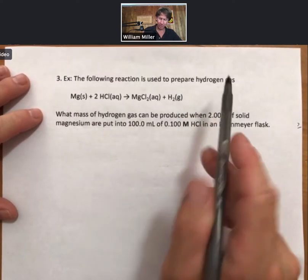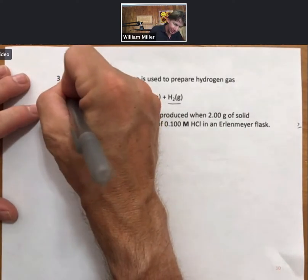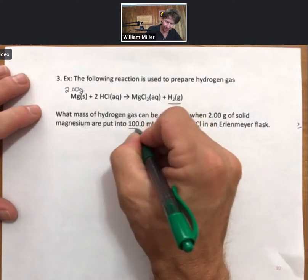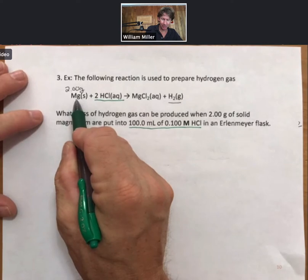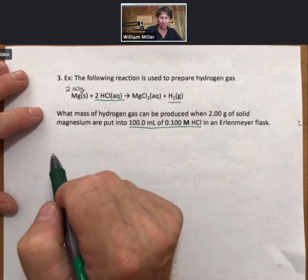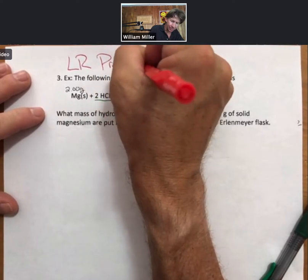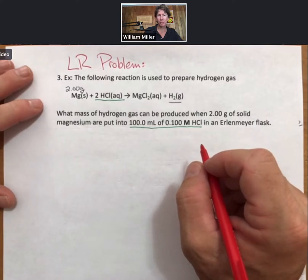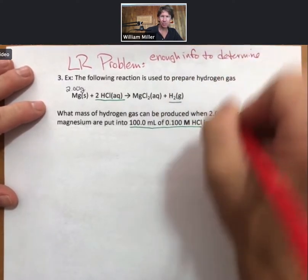It says the following reaction is used to prepare hydrogen gas. What mass of hydrogen gas can be produced when 2.00 grams of solid magnesium are put into 100.0 milliliters of 0.100 molar HCl? We have enough information to determine the moles of magnesium and to determine the moles of HCl. That means two reactants. Ladies and gentlemen, we have a limiting reactant problem. The way to read and identify a limiting reactant problem is that you have enough information to determine moles for two reactants.